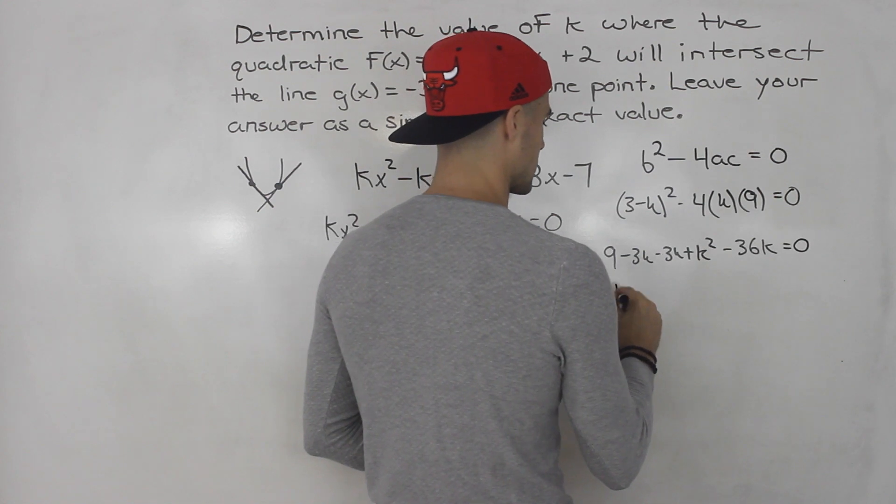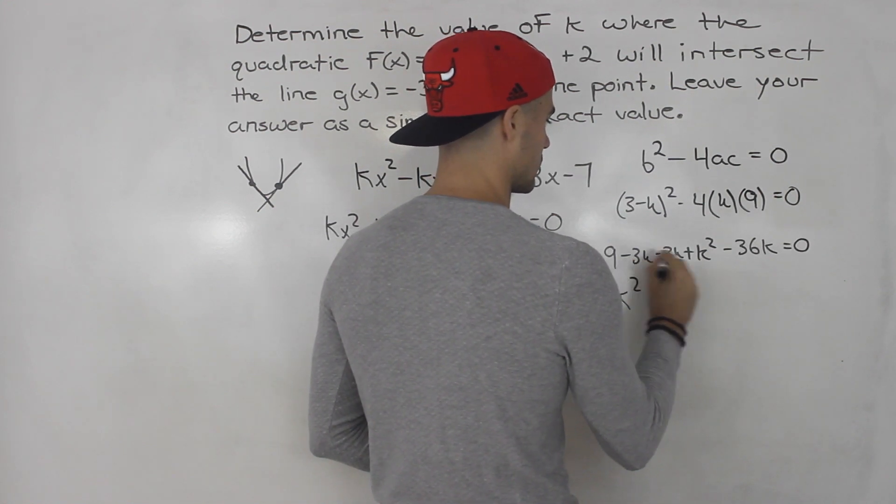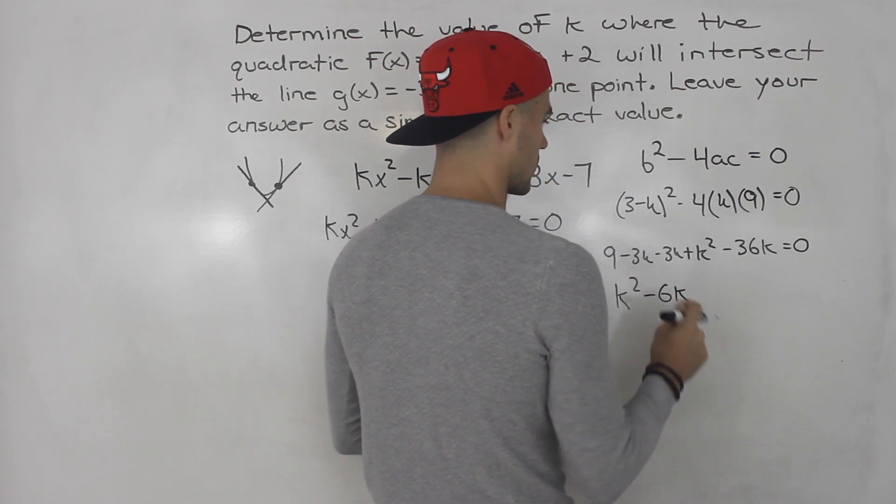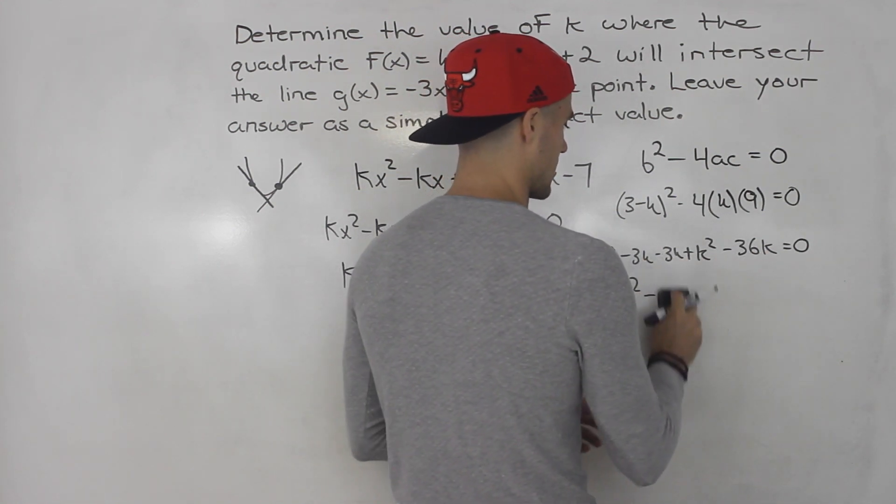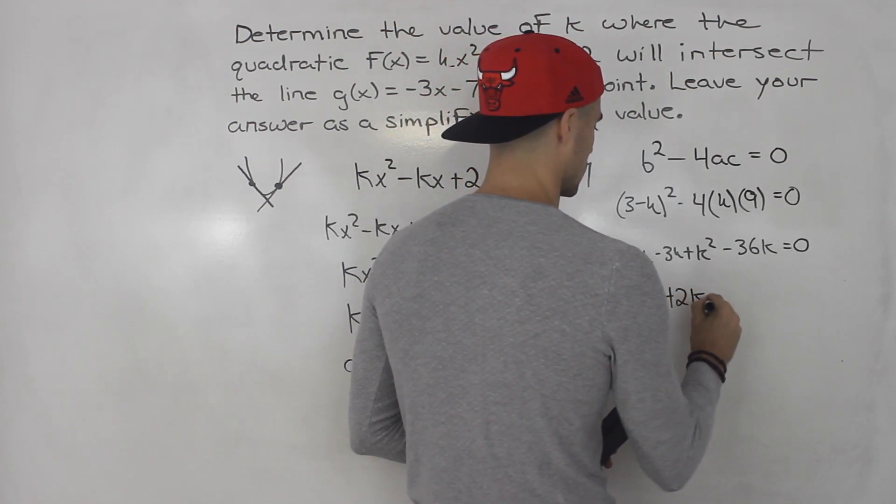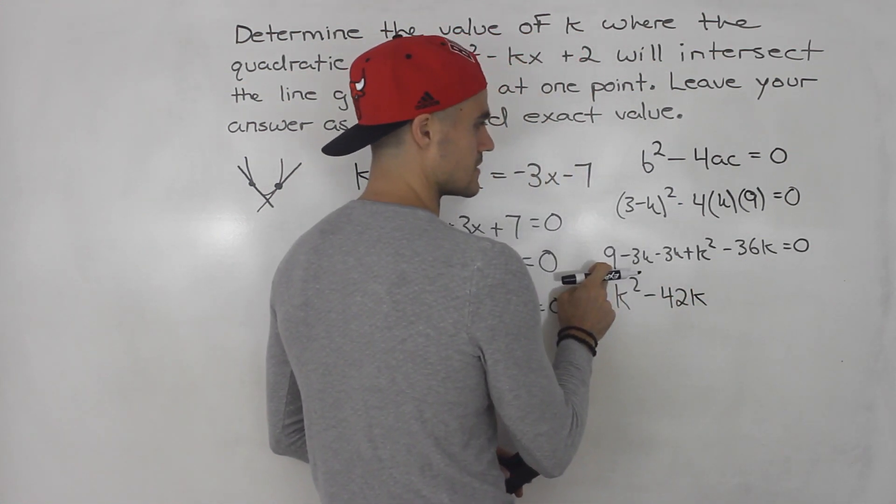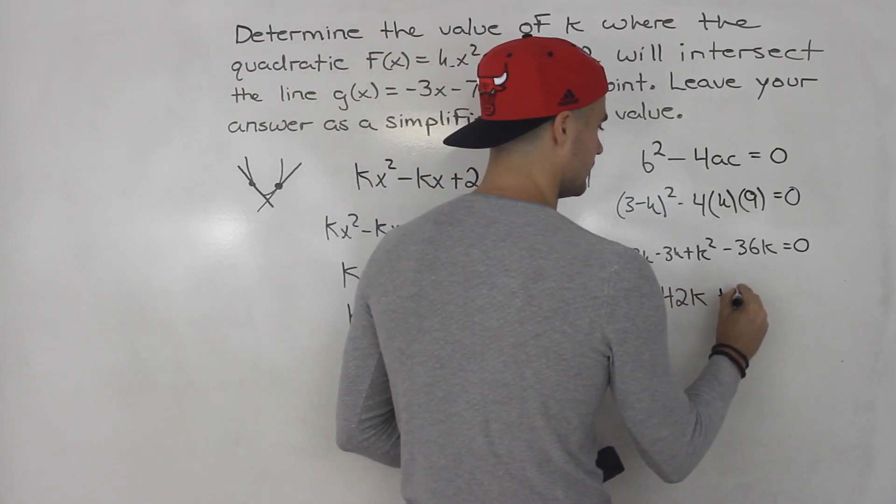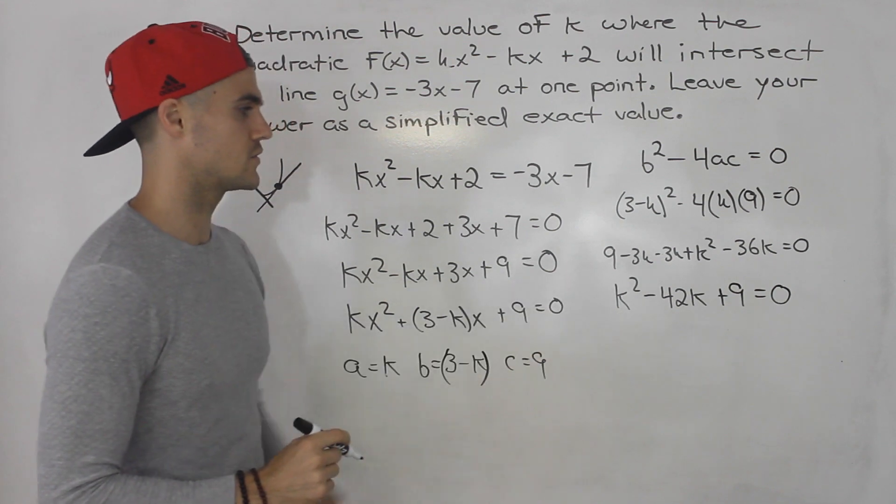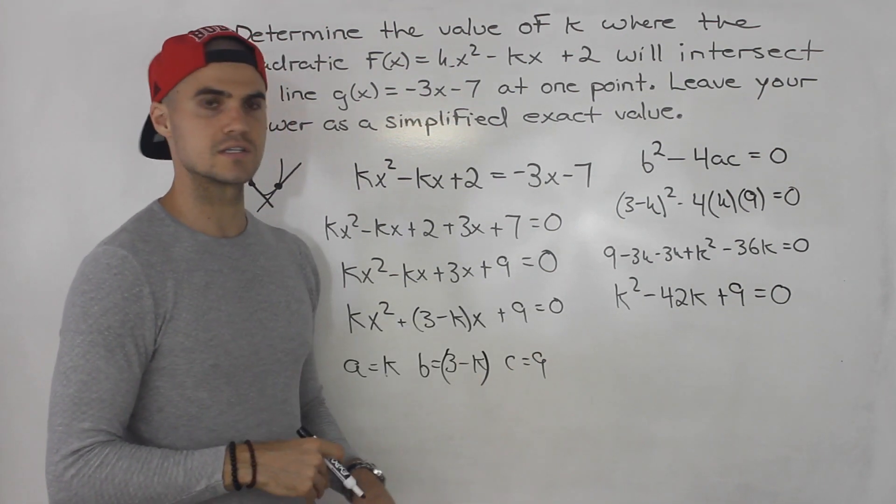So this k² here, that's in front. Negative 3k minus 3k, that's minus 6k. Or sorry, this is minus 6k minus 36k, that would give us minus 42k. And then this plus 9, let's just put it in front here. So we got k² minus 42k plus 9 equals zero.